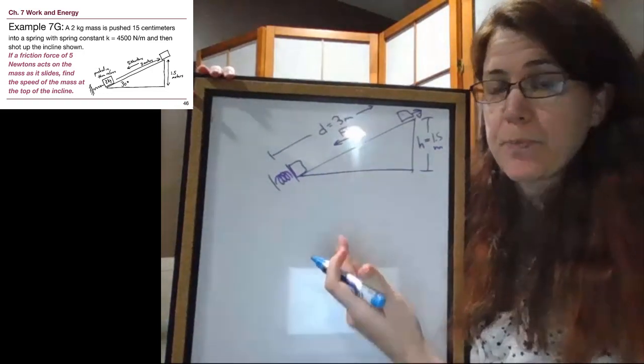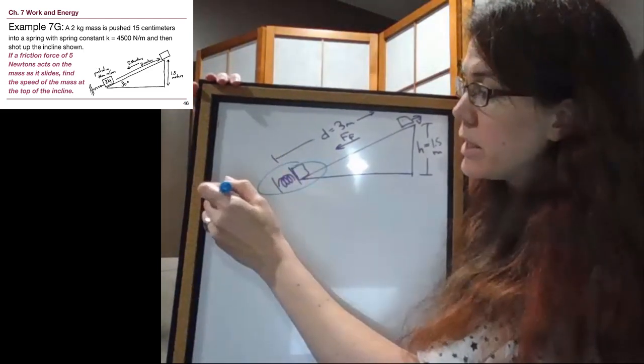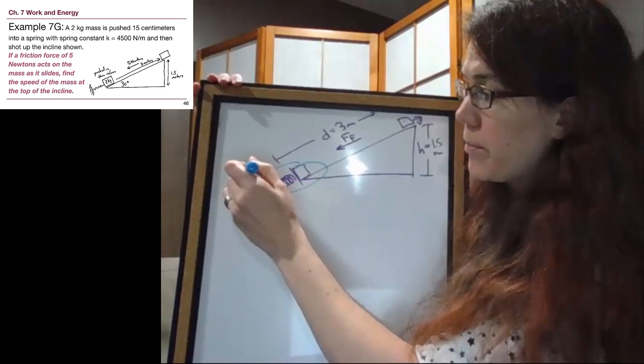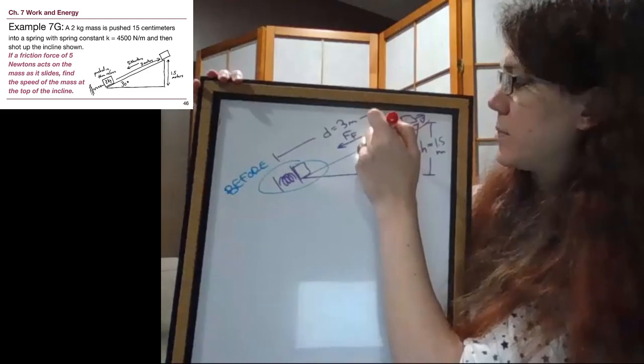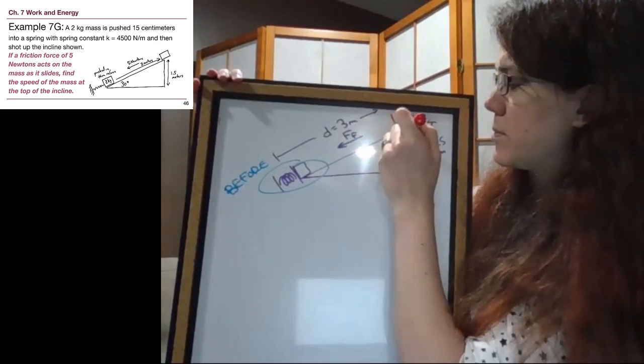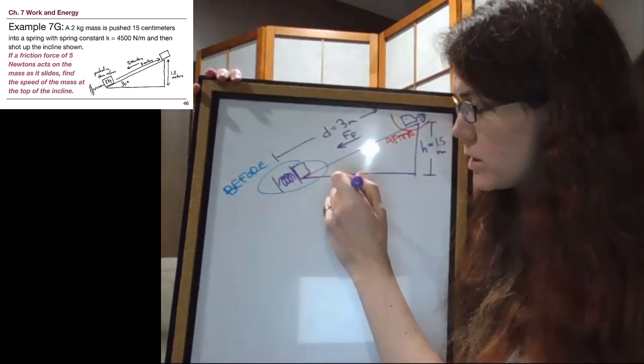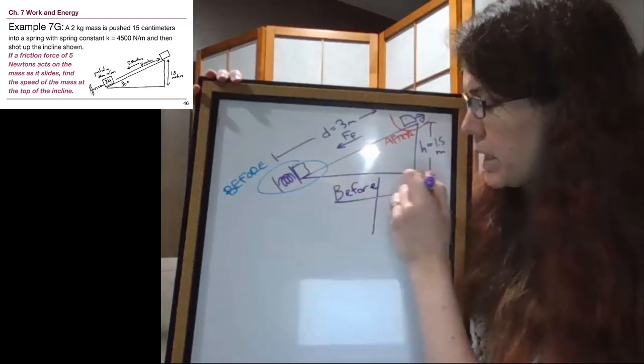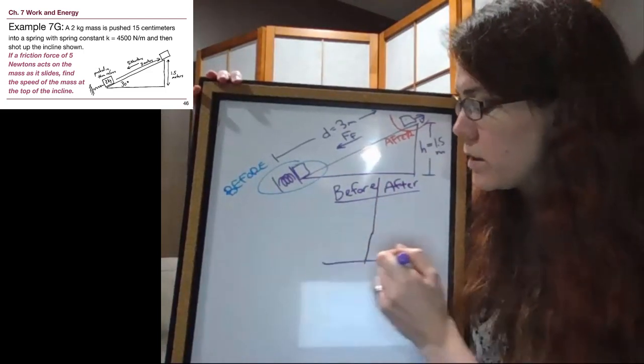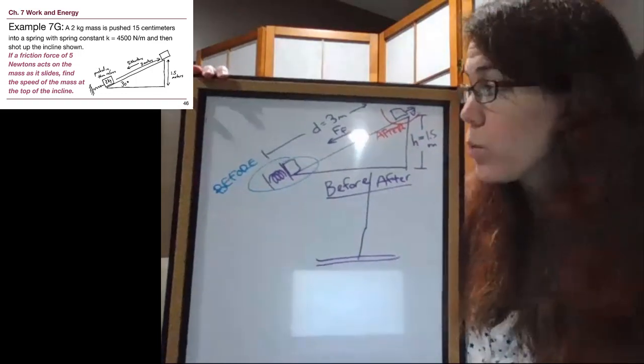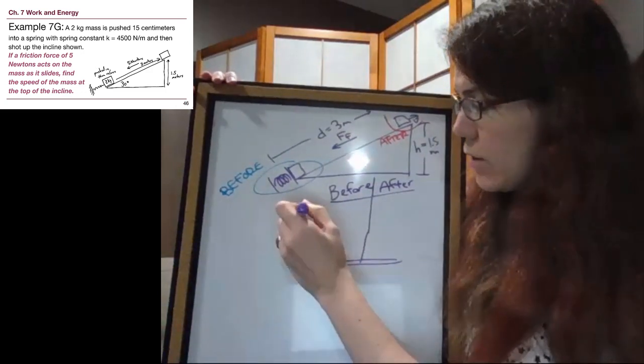So just like with every problem, no matter what the chapter is, we draw the picture and now what we do with all of our chapter 7 problems is we make a real clear indication to ourselves of what we mean by before and what we mean by after.